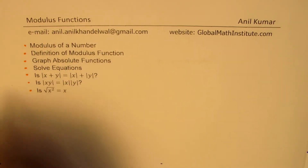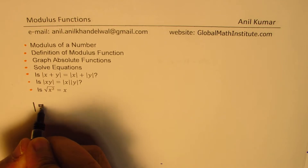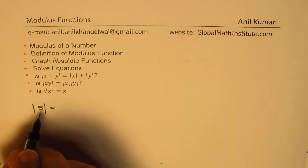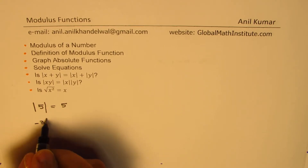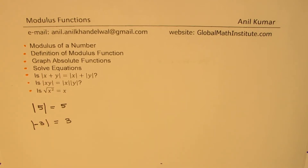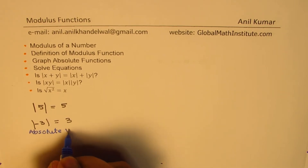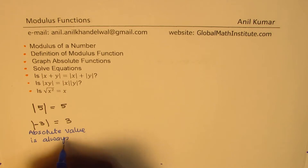Whenever we say modulus number, we are putting these bars here. So if I write a number within these bars — which is the sign of modulus function — the absolute value or modulus value of 5 is 5. However, if I have a negative number, in that case its value is also positive — so it will be just 3. The modulus value or absolute value is always positive.